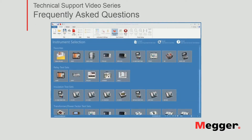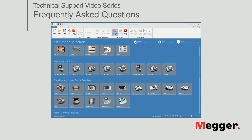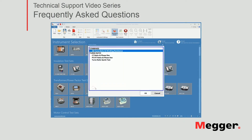Once you have PowerDB open, we need to click on the TTRU tree. Since I use it pretty often myself, it's under my favorites. But if it's the first time you're running PowerDB on your computer, you can find the TTRU tree under Transformer and Power Factor Test Sets. So let's go ahead and click it.